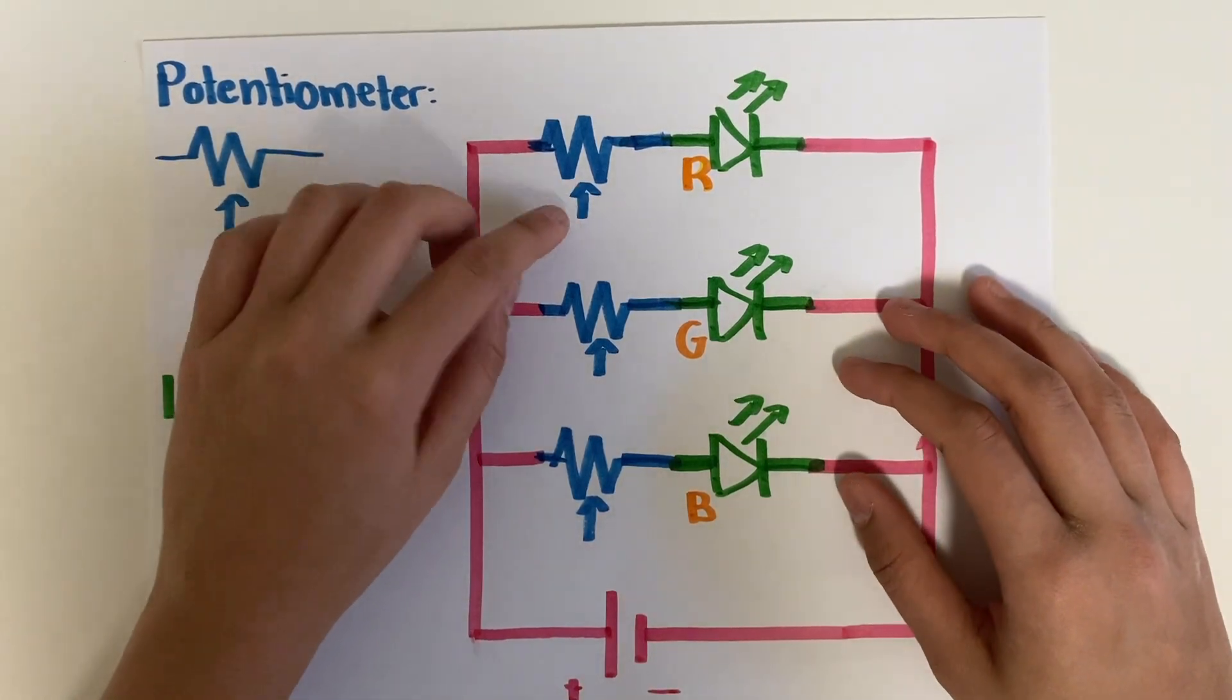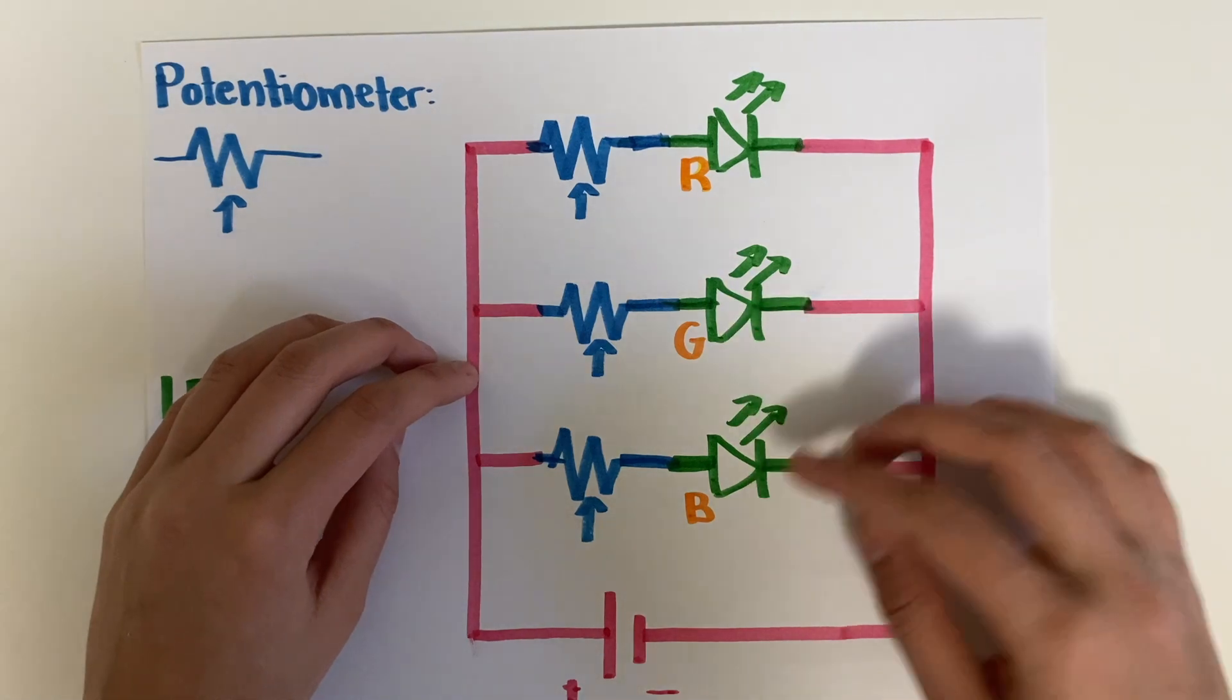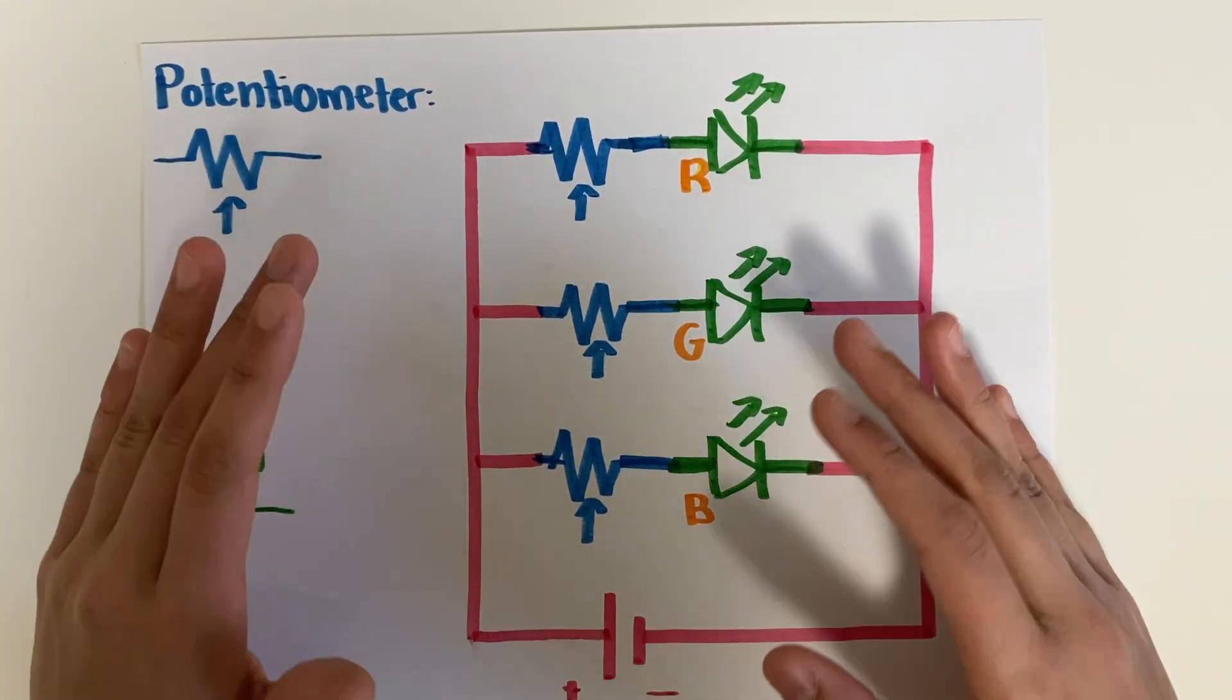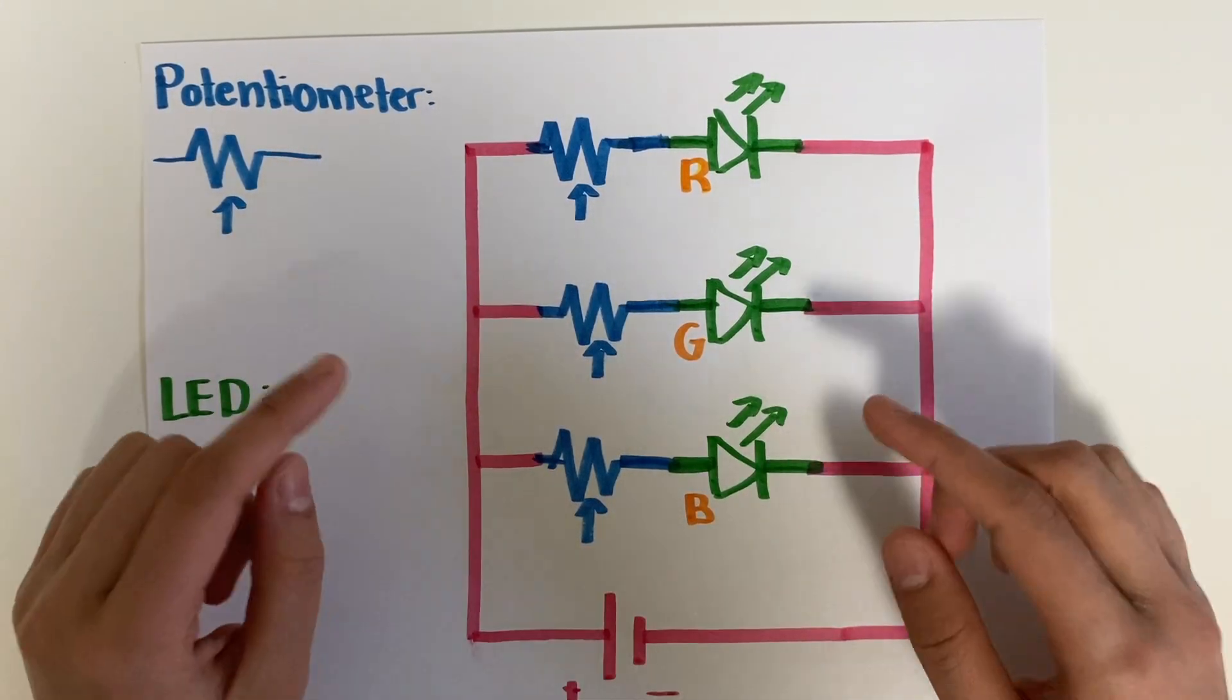So if we turn the potentiometer, that's going to change the intensities of the LEDs, which once again creates different colors. So now let's actually look at how this works and let's build it.